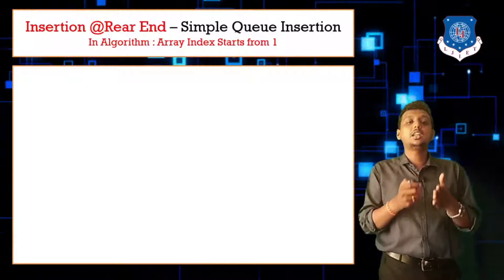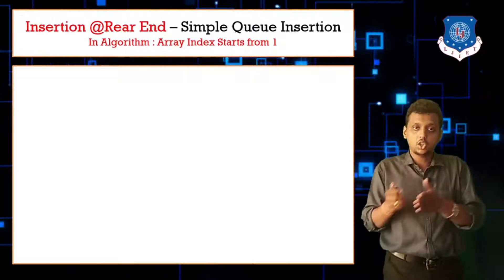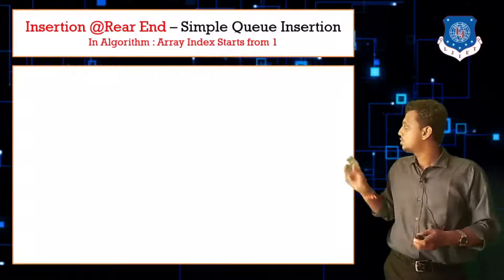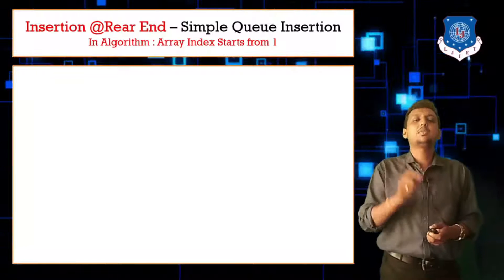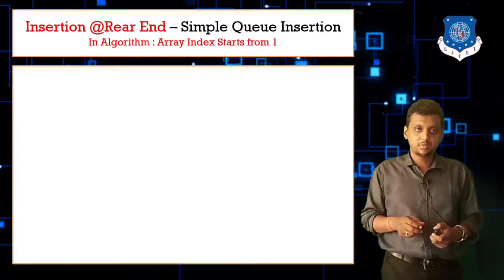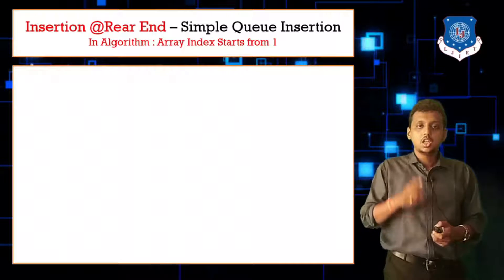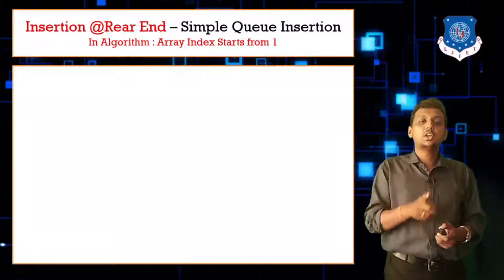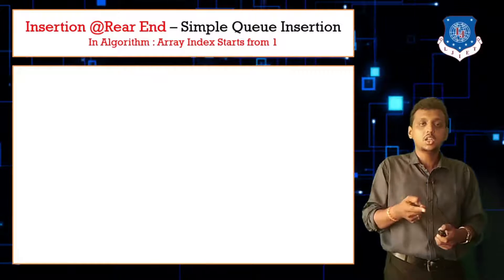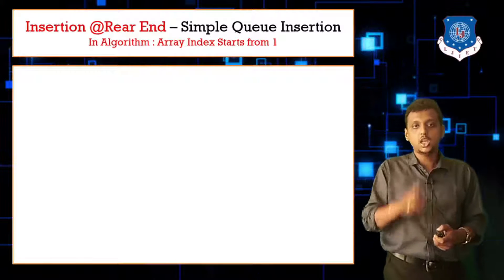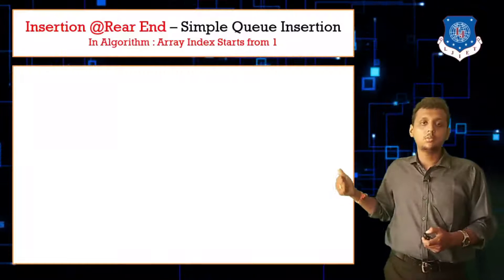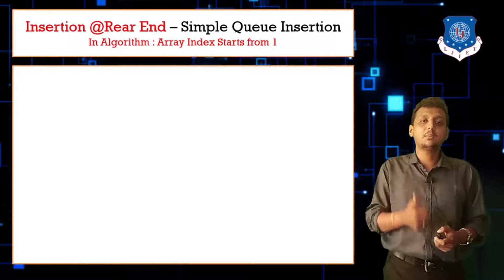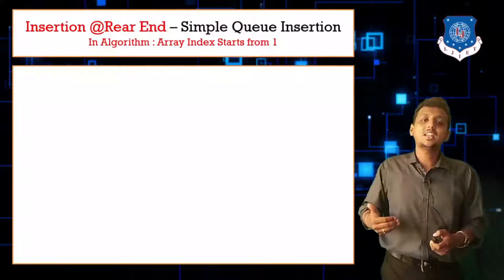This is the double-ended queue insertion at rear end algorithm. The naming convention for the function is based on the work the algorithm performs. In any programming language, the function name must be meaningful as per the work written by the function. The function name is INS_at_rear_end and it performs double queue insertion at the rear end.